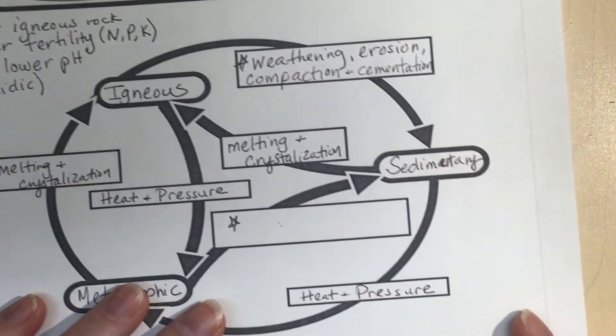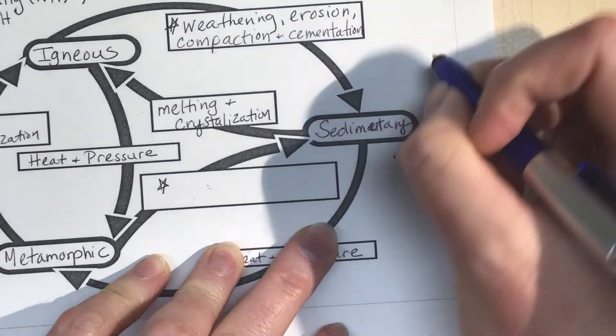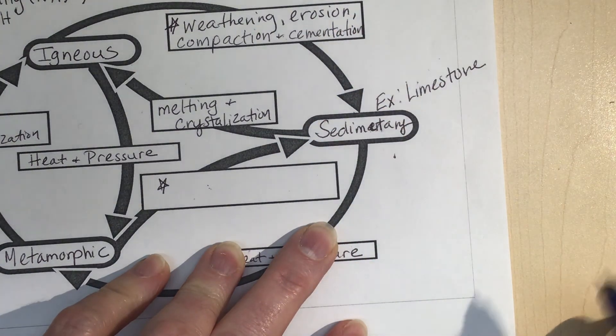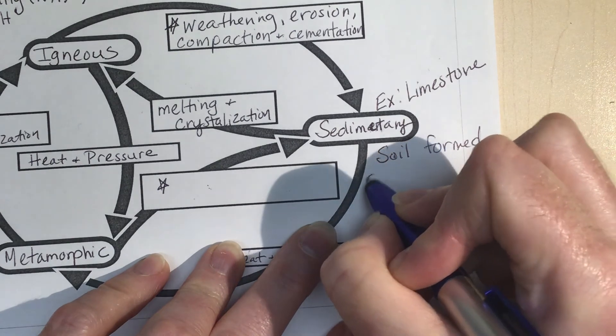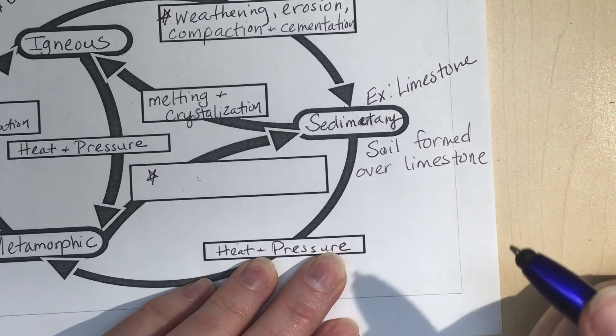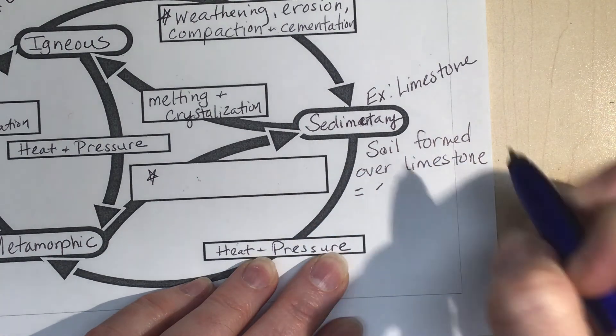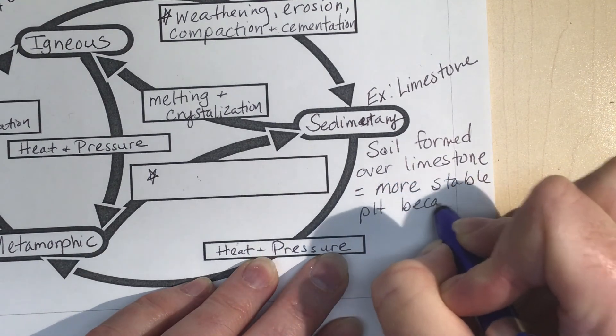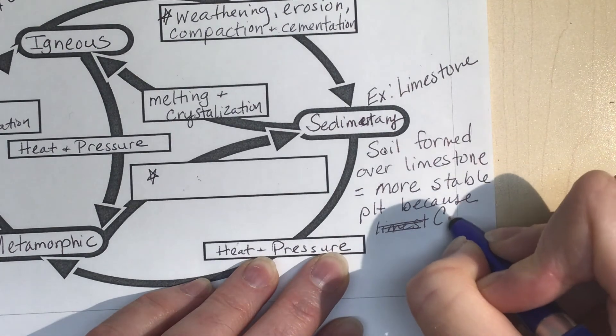The next one I want to talk about is sedimentary rock. So down here with sedimentary, we're going to write some things in here. One type of sedimentary rock is limestone, so an example of sedimentary rock is limestone. And that's a very common sedimentary rock. And so soils formed over limestone, so the limestone weathers and creates soil, and it takes decades for this to happen. It equals a more stable pH because limestone, well limestone is made out of calcium carbonate.